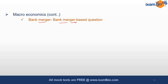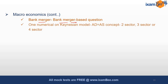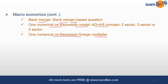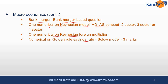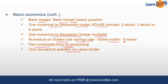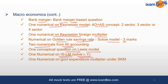Previous year papers do not mean the same questions will be repeated, but they give you an idea of what kind of questions can be asked. There was a numerical on the Keynesian model — AD-AS concept, two-sector, three-sector, or four-sector. A numerical on the Keynesian foreign trade multiplier, a numerical on the golden rule saving rate and Solow model (three marks), two numericals on national income accounting, a conceptual question on the Lewis model, a numerical on IS-LM to solve R and Y, and one numerical on government expenditure multiplier.